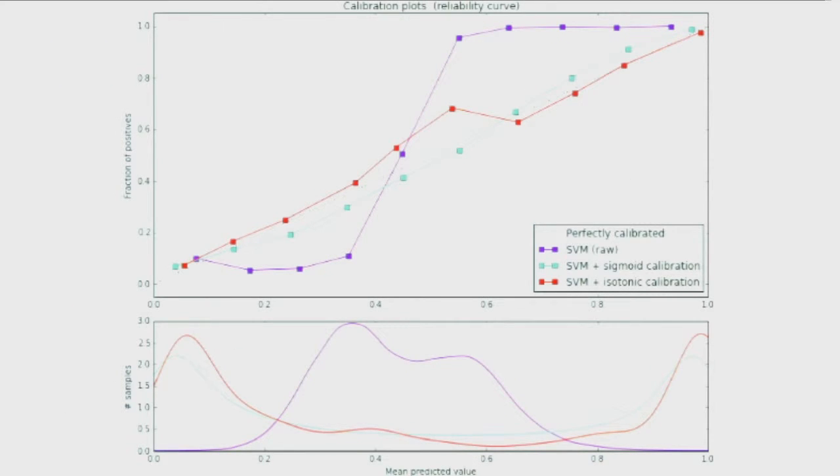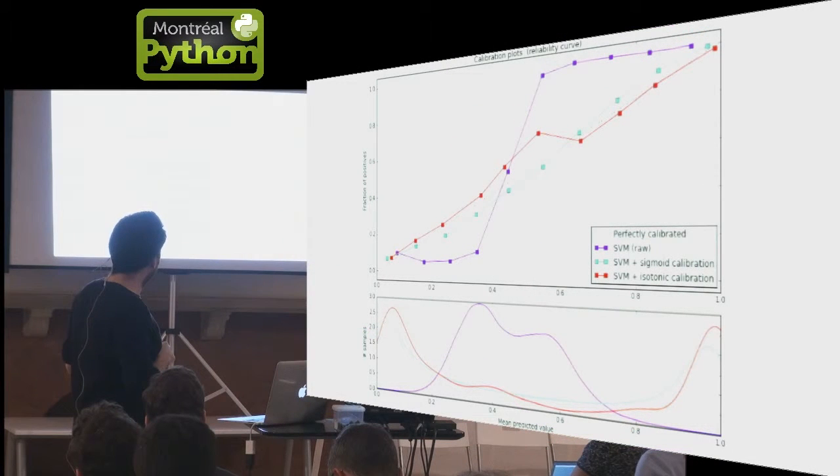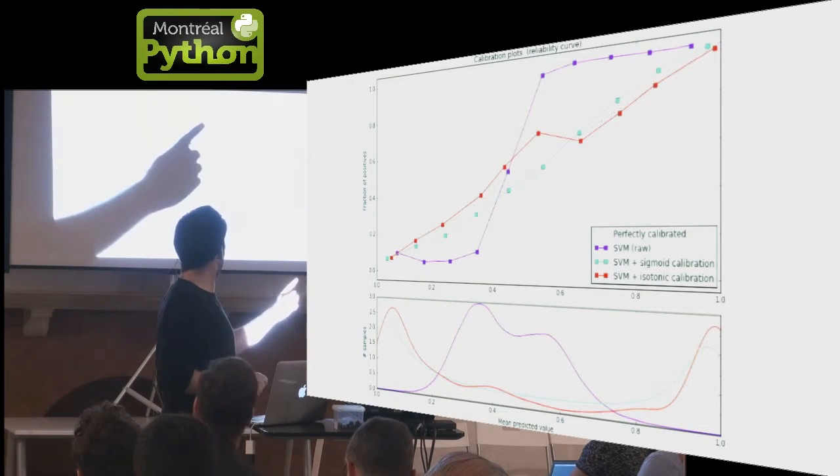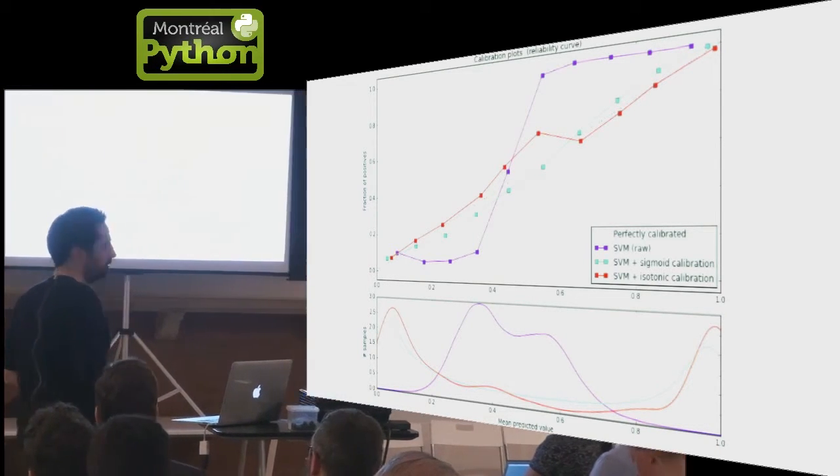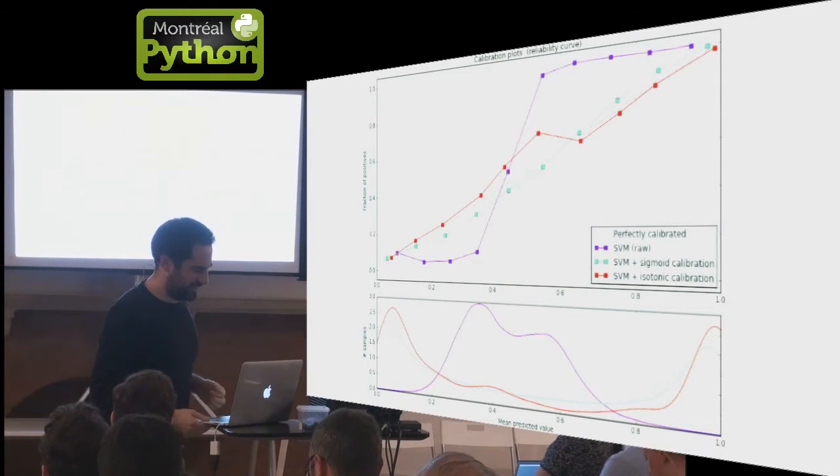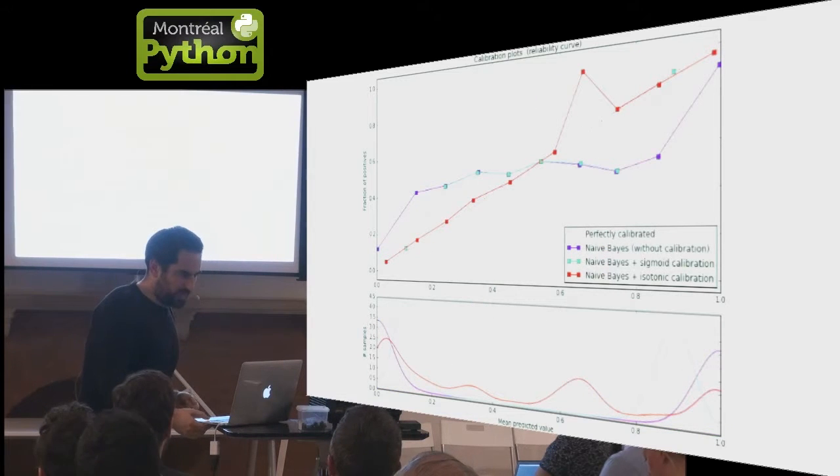If you take the support vector machine, the original model is still the S-shape, the sigmoid-shape calibration curve, the blue curve. And you can see that both the red calibration, which is isotonic, and green calibration, which is sigmoid, are kind of moving the model towards the diagonal, a well calibrated model. You can see that there is an actual off-diagonal element here, but we discovered that there was a bug in the release, so we fixed it in master, not yet released yet.